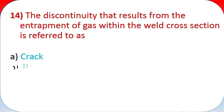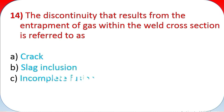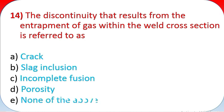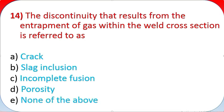Question 14: The discontinuity that results from the entrapment of gas within the weld cross section is referred to as: A - crack, B - slag inclusion, C - incomplete fusion, D - porosity, E - none of the above.